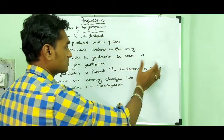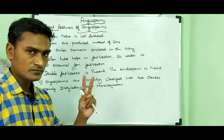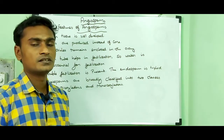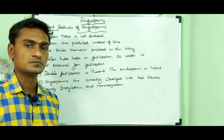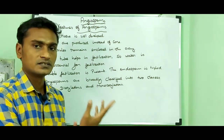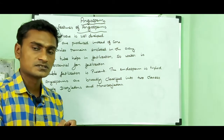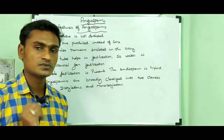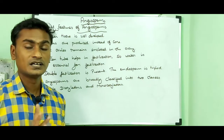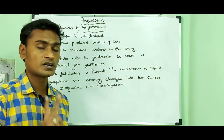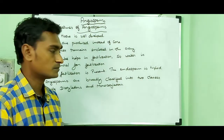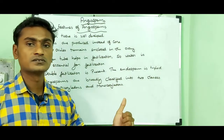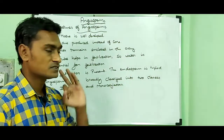Double fertilization is present and the endosperm is triploid. The pollen grains produce two male nuclei. One male nucleus fuses with the female nucleus to form the zygote, which develops into the embryo. The other male nucleus fuses with the two central polar nuclei, resulting in the formation of a triploid endosperm.